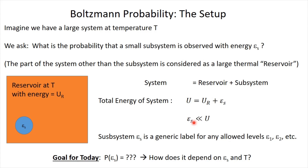We've constructed this so that the energy of the subsystem is much much less than the energy of the total system. It's important to keep in mind that E_s is meant to be a generic label — it could refer to a set of discrete quantum states or energy levels, which is most often how we'll view it, or there could be a continuous distribution of energies that are allowed. Our goal is to figure out what is the probability that we find this little piece of the system with energy E_s, and how that probability depends on E_s and the temperature of the reservoir T.